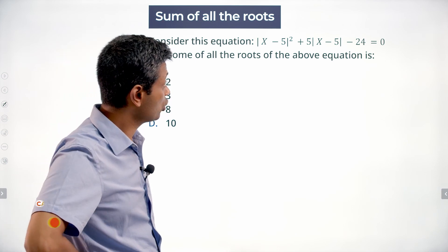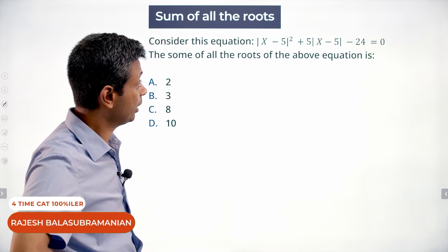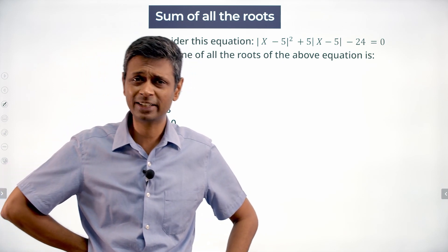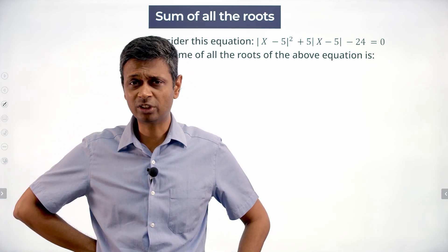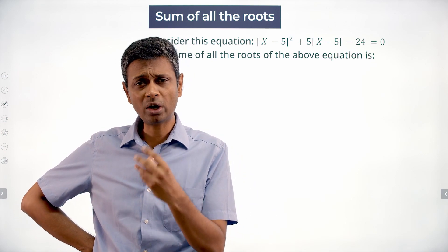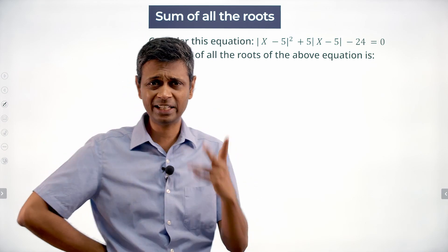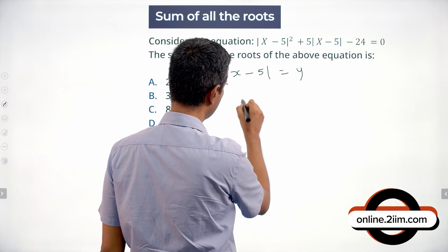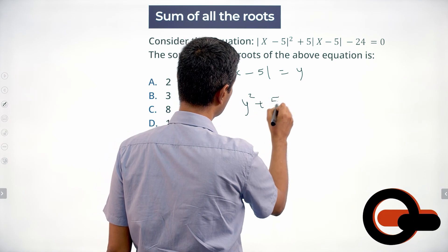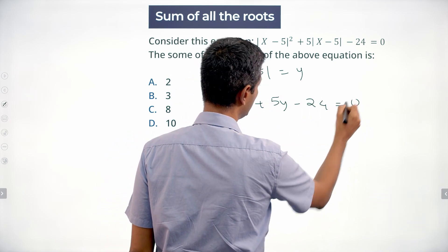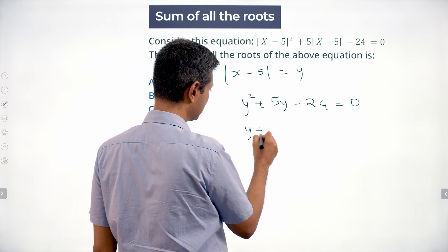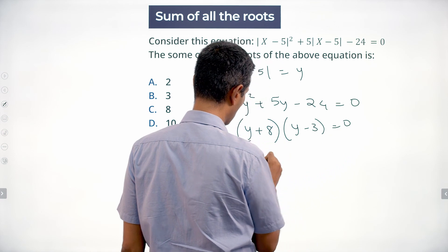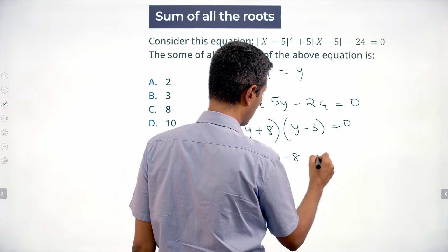Consider this equation: modulus of (x minus 5) whole square plus 5 times modulus of (x minus 5) minus 24 is equal to 0. All of these questions have modulus expressions involved — this is a quadratic in that expression. Call modulus of (x minus 5) as y, so this becomes y squared plus 5y minus 24 equals 0, or (y plus 8)(y minus 3) equals 0, giving y equals minus 8 or plus 3.